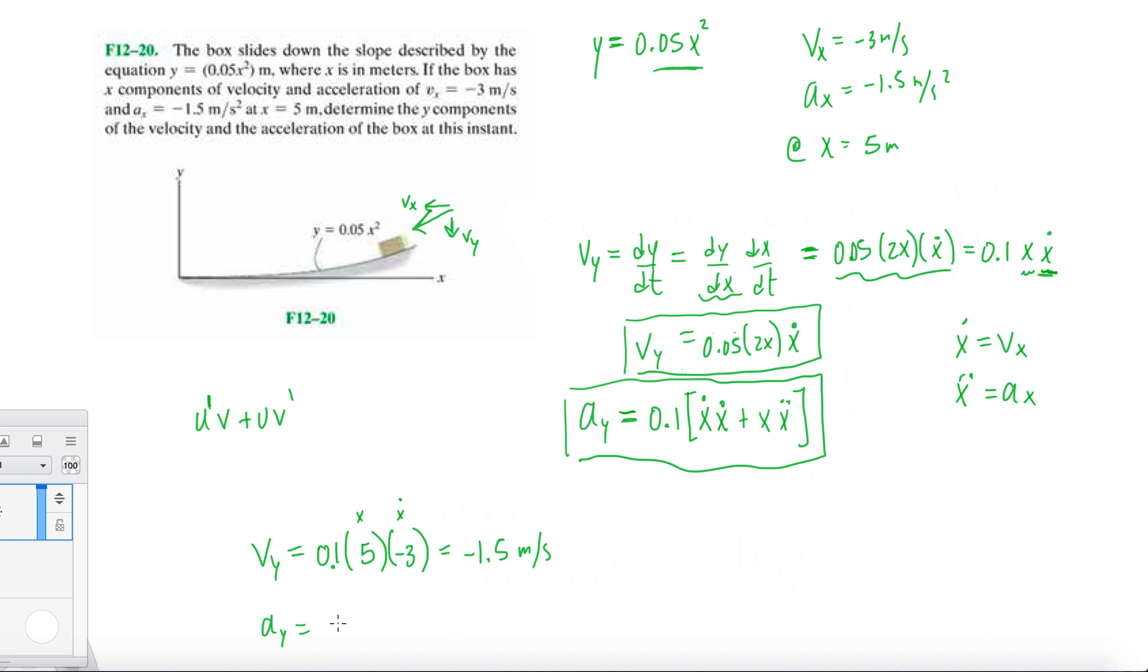And then for ay we have 0.1, so that's going to be -3 times -3, plus position at 5 and acceleration at x equals 5, which is -1.5. Once we do this, multiply that out on your calculator, you should get 0.15.